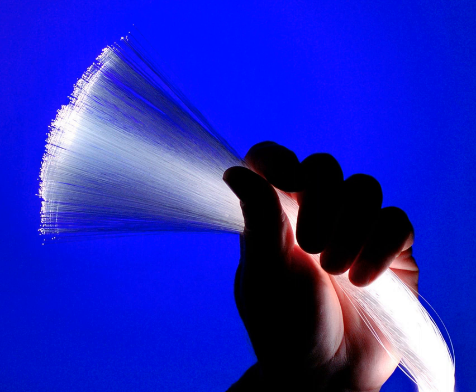Optical fibers can be used as sensors to measure strain, temperature, pressure, and other quantities by modifying a fiber so that the property to measure modulates the intensity, phase, polarization, wavelength, or transit time of light in the fiber.